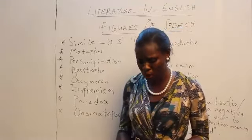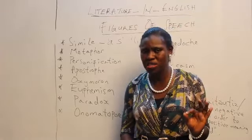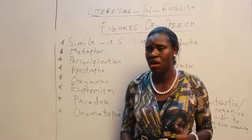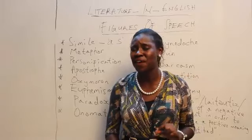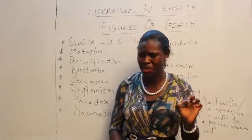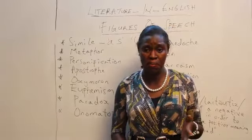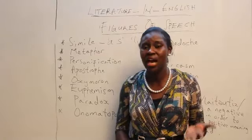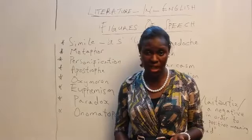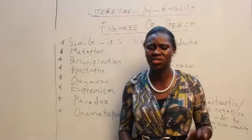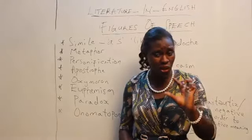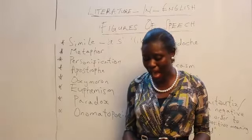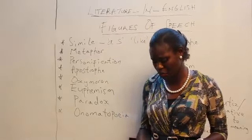Next up, we will be looking at paradox. A paradox is a statement which seems to be self-contradictory or absurd, but turns out to be heavy with meaning. For example, 'the child is the father of the man' — how can a child be the father of a man? But looking deeply, the child began to take responsibilities for the father over time. Another example: 'cowards die many times before their death.' That is also a paradox.